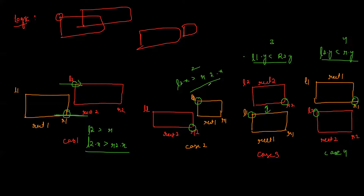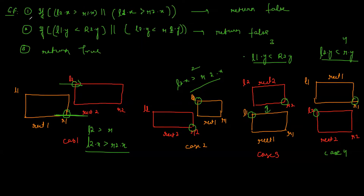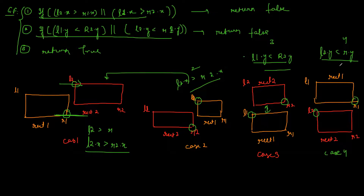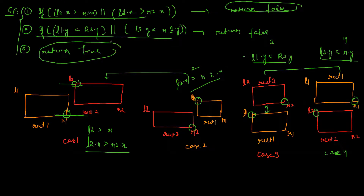Let's add the general formula to understand exactly what is happening. Here I have written all the conditions we'll be checking: the first two handle the left and right cases, and the second handles the third and fourth cases. If any condition is satisfied I return false — meaning the rectangles are not overlapping. If none are satisfied, I return true. This is the main idea, and since things are quite simple, you can implement it in any language.